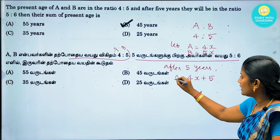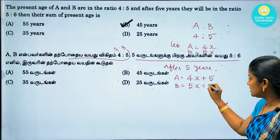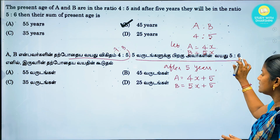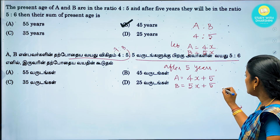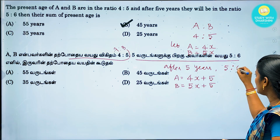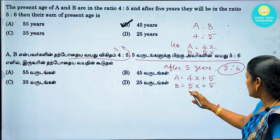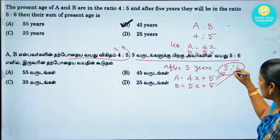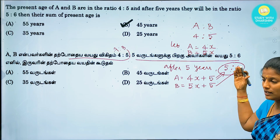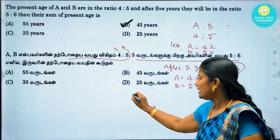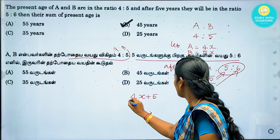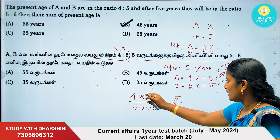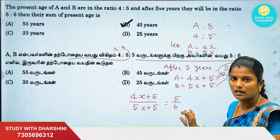It looks like after adding 5, B is 5x plus 5. Now we set up the equation: 4x plus 5 divided by 5x plus 5 equals 5 by 6. The numerator value is 5 and the denominator value is 6. So we need to find x using cross multiplication.